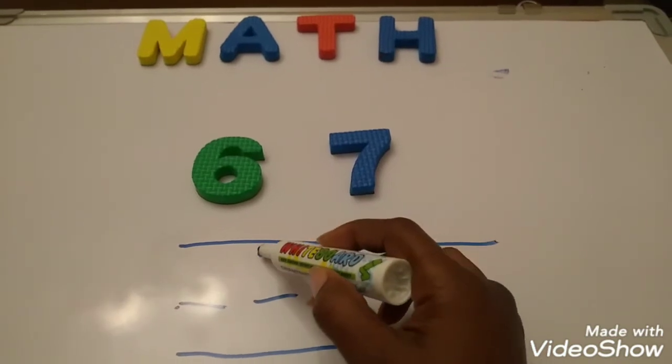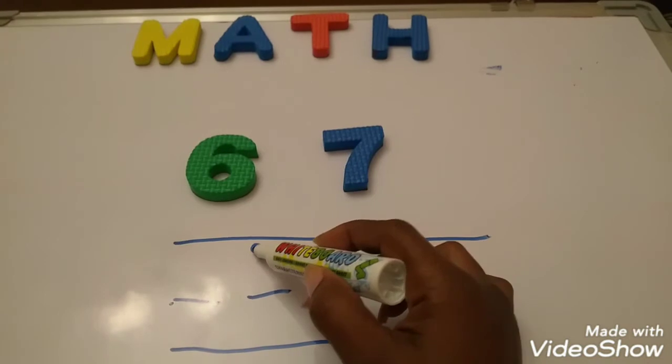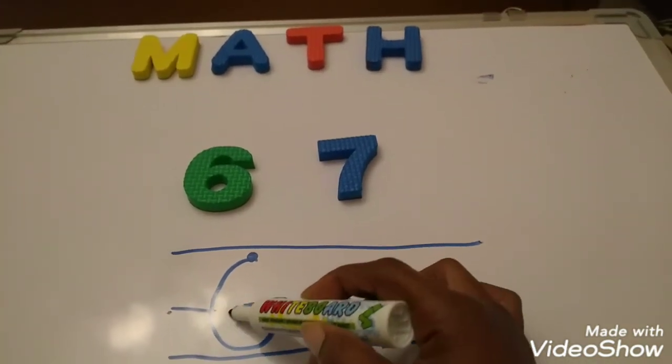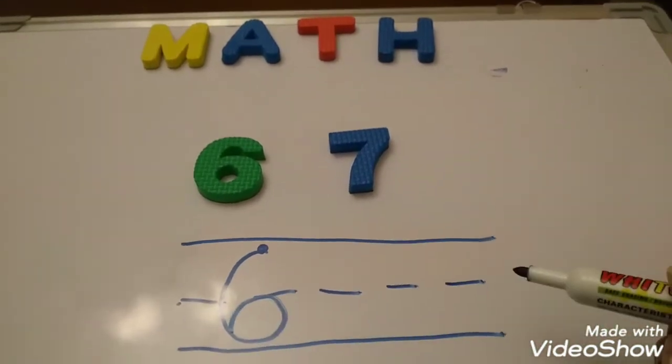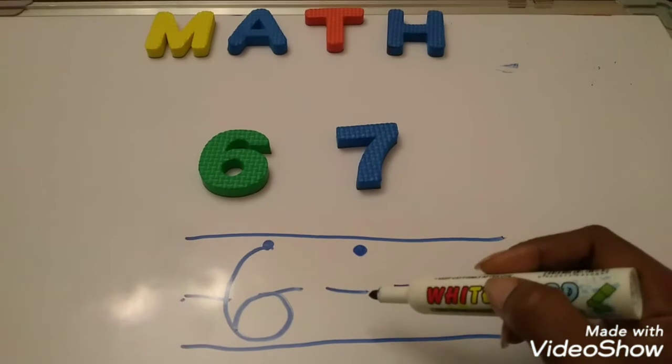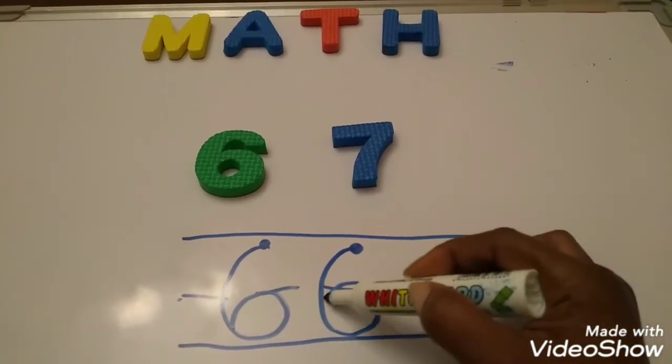Here's our magic dot right here. Okay, we start at the magic dot. Go around. Curve. And stop. Try that one more time. Magic dot. Around. Curve. And stop.